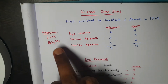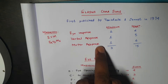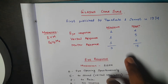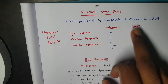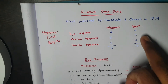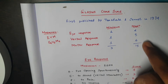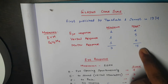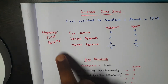It contains three components, which we can memorize using the mnemonic EVM: Eye response, Verbal response, and Motor response. Each component has a minimum score of 1. Eye response has a maximum of 4, verbal response a maximum of 5, and motor response a maximum of 6. So the minimum total score is 3 and the maximum is 15 — memorized as E4, V5, M6.